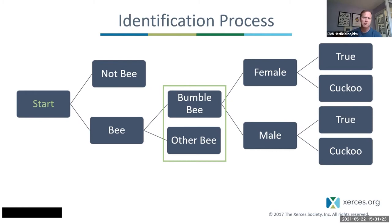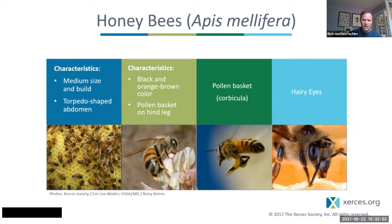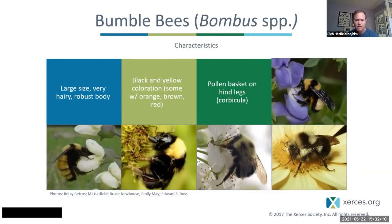Once we've decided it's a bee, we need to decide if it's a bumblebee or some other bee. Two main groups you may mistake bumblebees for are honeybees and carpenter bees. Honeybees are quite different — like wasps and flies, they have colored exoskeletons, and that brown and black patterning is on their exoskeleton, not hairs. They have these torpedo-shaped, long linear abdomens and are paler colors, whereas our bumblebees are going to be big, bold, more hairy, and more robust than honeybees.